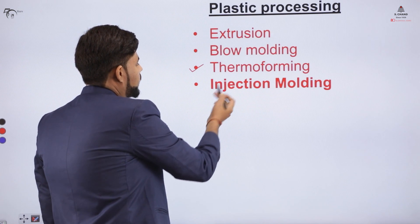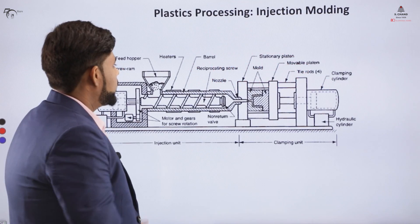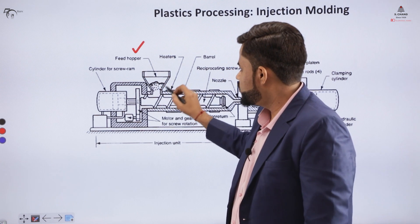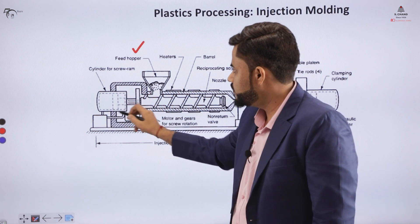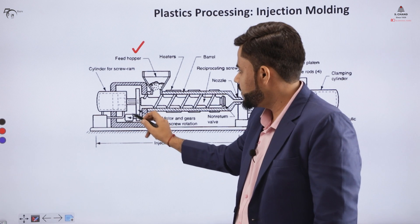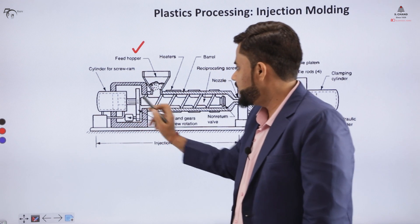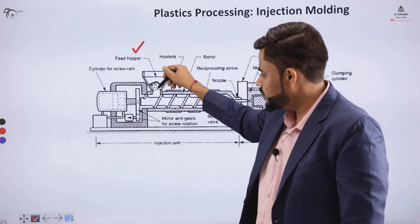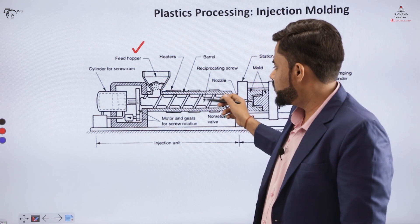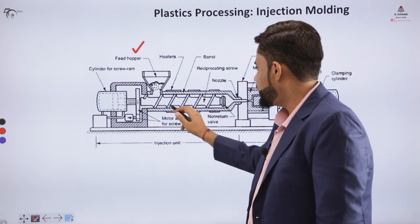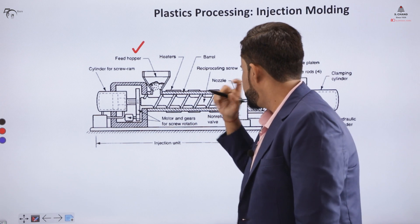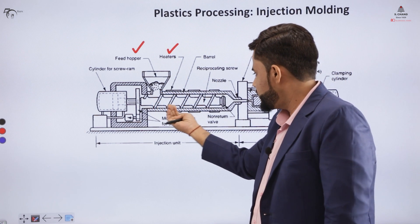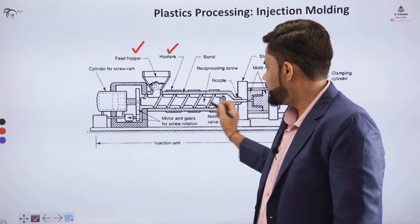Now we will be learning about the injection molding process. As you can see the diagram of the injection molding process on the board — there is a feed hopper used to feed plastic granules, a motor installed on the surface with a cylinder and screw ram, and a barrel with a reciprocating screw so that the plastic moves inside. The melting of plastic granules is done with the help of heaters, and when the plastic granule reaches the last portion, it becomes heated plastic.